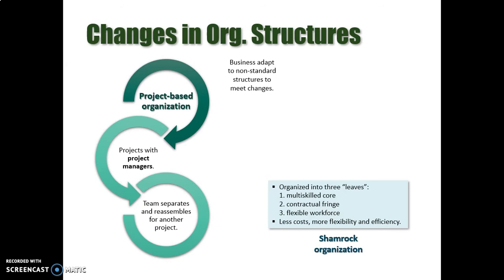You can have another leaf with a contractual fringe — a group of people that you hire for specific tasks that you prefer to outsource, tasks you prefer not to do yourself as a business. And then you have a flexible workforce: the third leaf, a group of employees or workers that you hire occasionally for specific situations, like specific seasons or specific moments of your business activity, to meet specific needs for a specific moment.